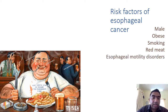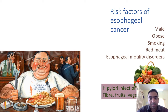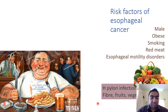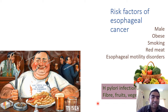Esophageal motility disorder is another risk factor. On the other hand, H. pylori infection, fruits and vegetables, and dietary fibre are favorable or protective risk factors in esophageal cancer.